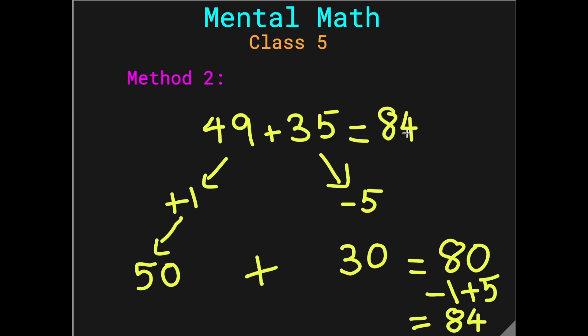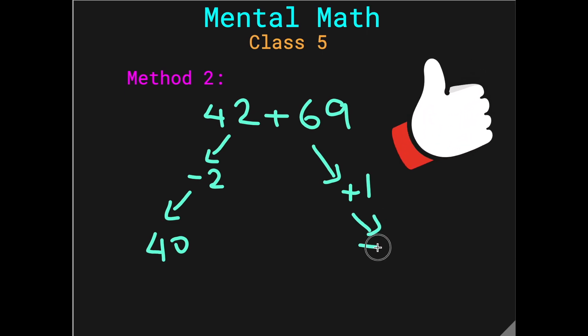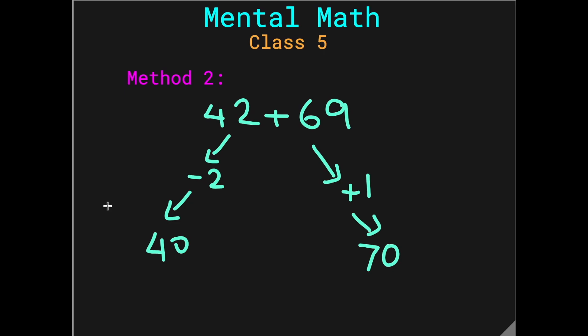Let's do one more question: 42 plus 69. Now, 42 can be turned into a multiple of 10 by subtracting a 2 from it, so it becomes a 40. And 69 can be turned into 70, the closest multiple of 10 by adding a 1. Simple, isn't it? Now, 40 plus 70, add 4 plus 7 in your brain to get an 11 and then put the 0 separately to get the answer 110. Again, this is not the final answer. We have to do the opposite of the operations that we did. So, minus 2 turns into plus 2 and plus 1 turns into minus 1. Do the addition first: 110 plus 2 is 112 minus 1 is 111. And this is the final answer.